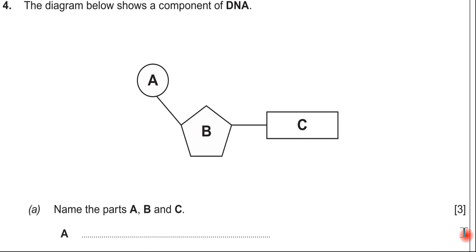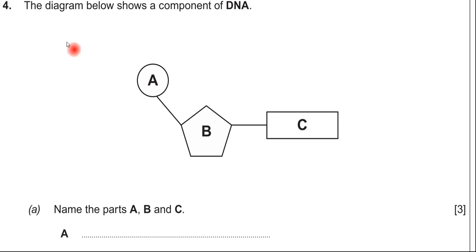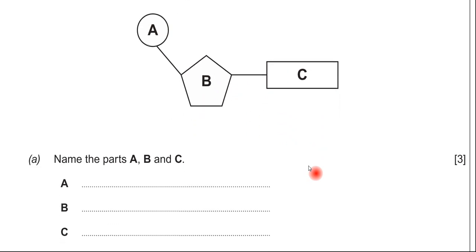This is question number four from the June 2014 paper. The question is about DNA and cell division. The first part is on DNA, and the image on screen is that of a nucleotide. A nucleotide has three components, and you're asked to name those parts A, B, and C.